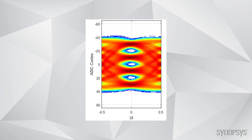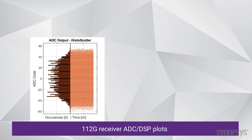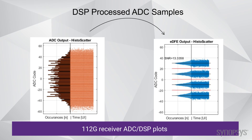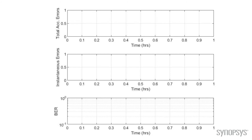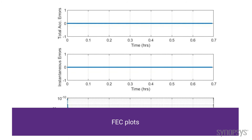Let's take a look at the receiver eye plot in this loopback setup. An open PAM4 receiver eye at 106.25 gigabits per second shows robust receiver performance. The 112G N5 evaluation board GUI shows receiver ADC diagrams — you can see the raw ADC output and the cleaned-up post-DSP output.